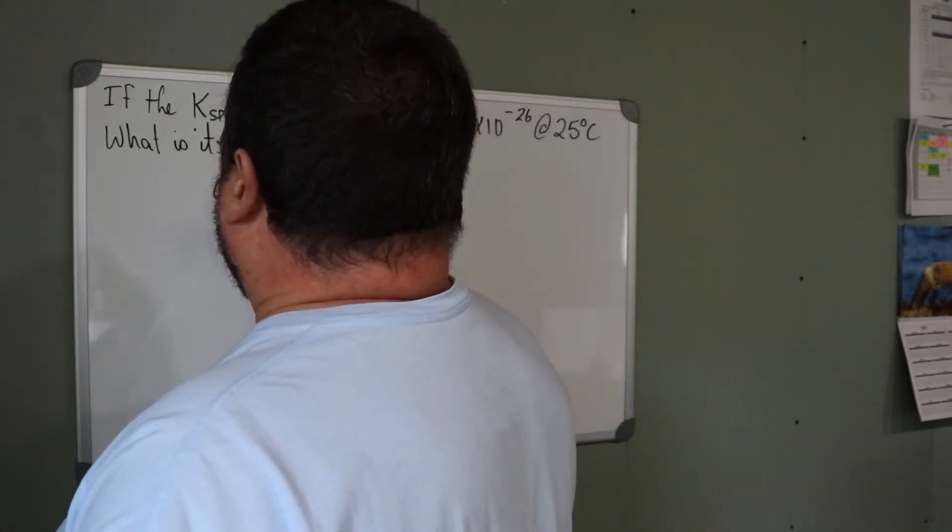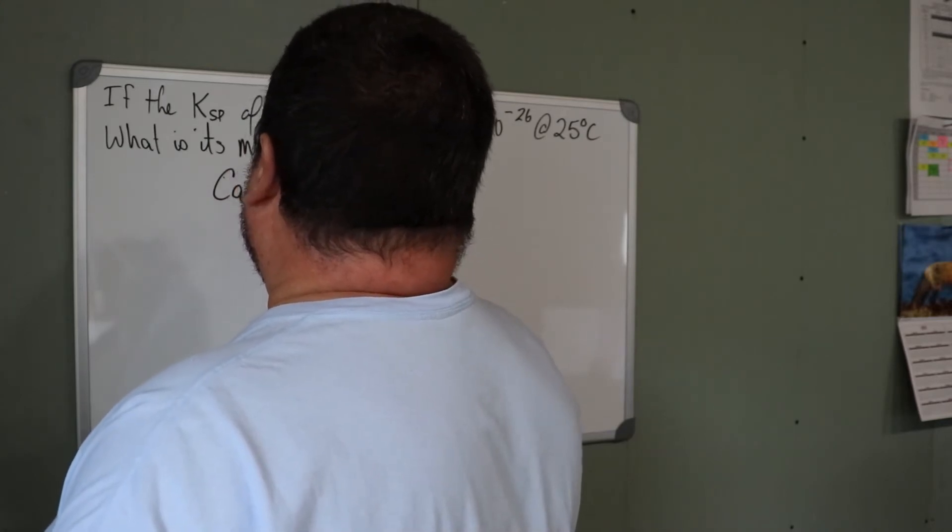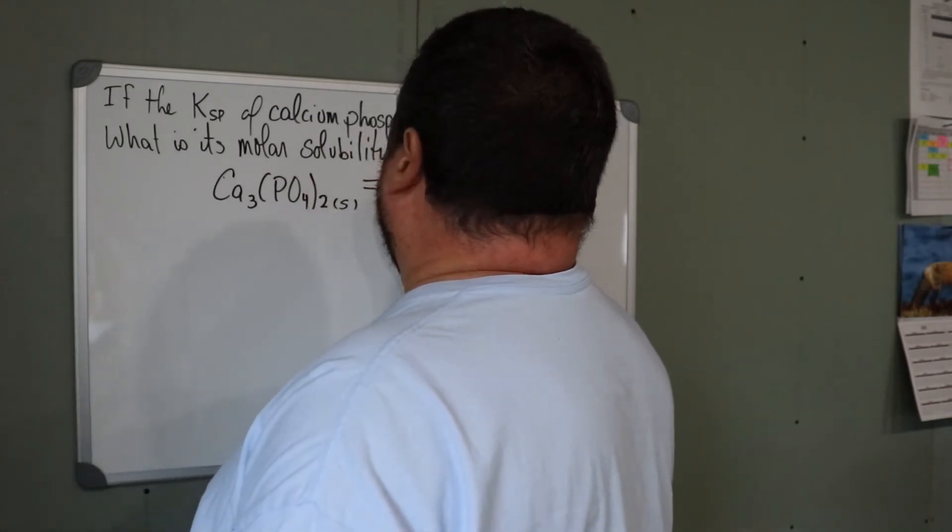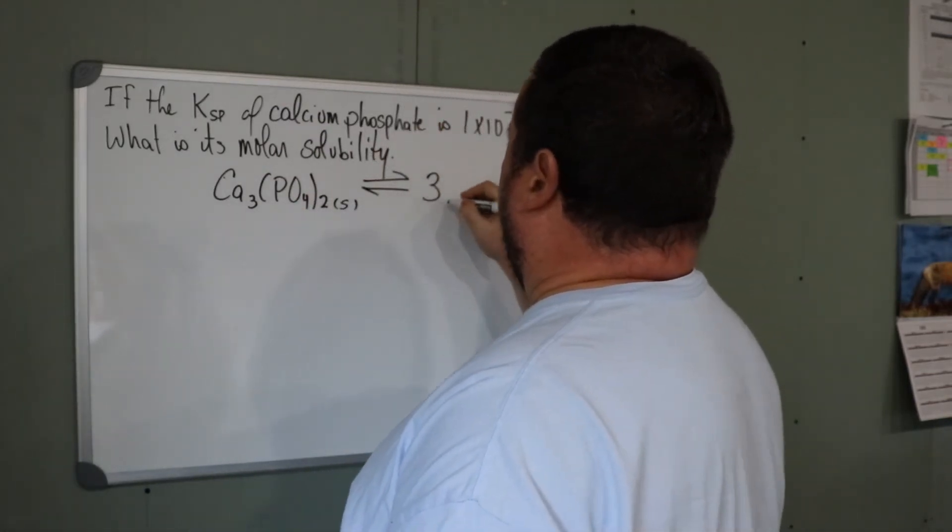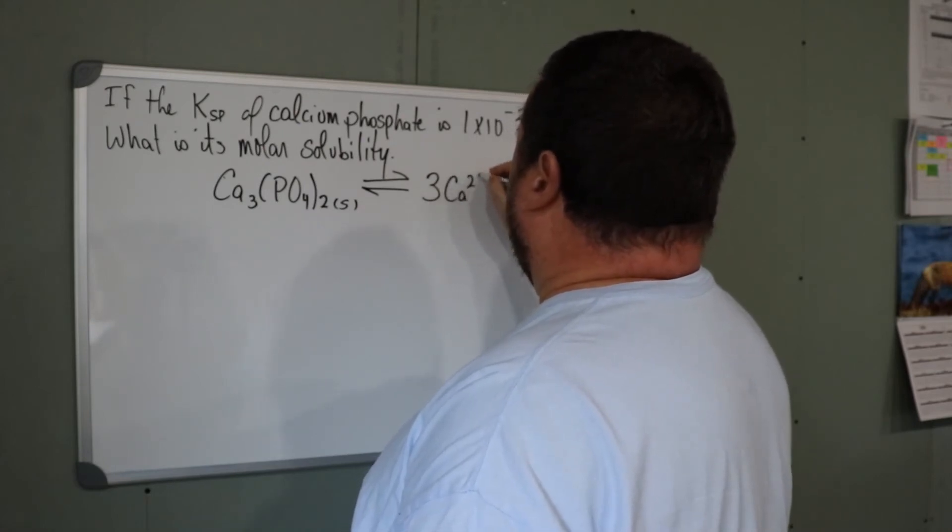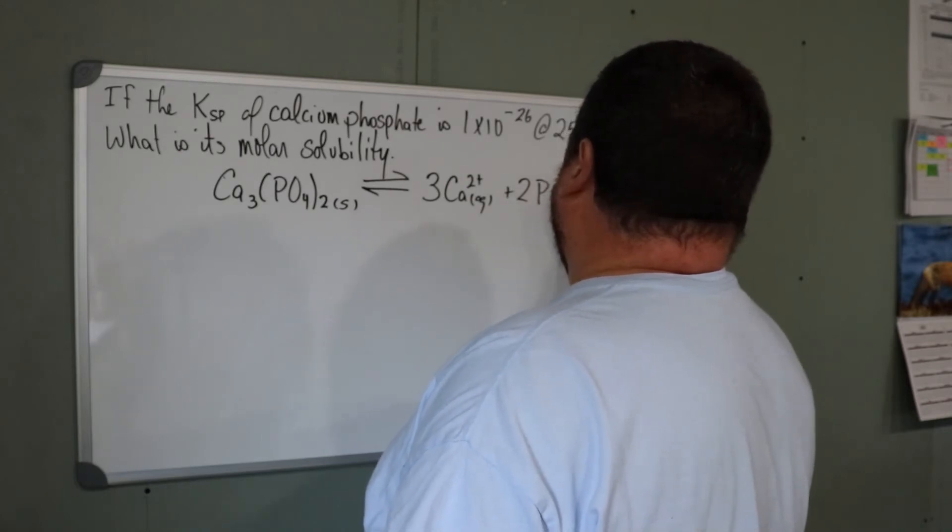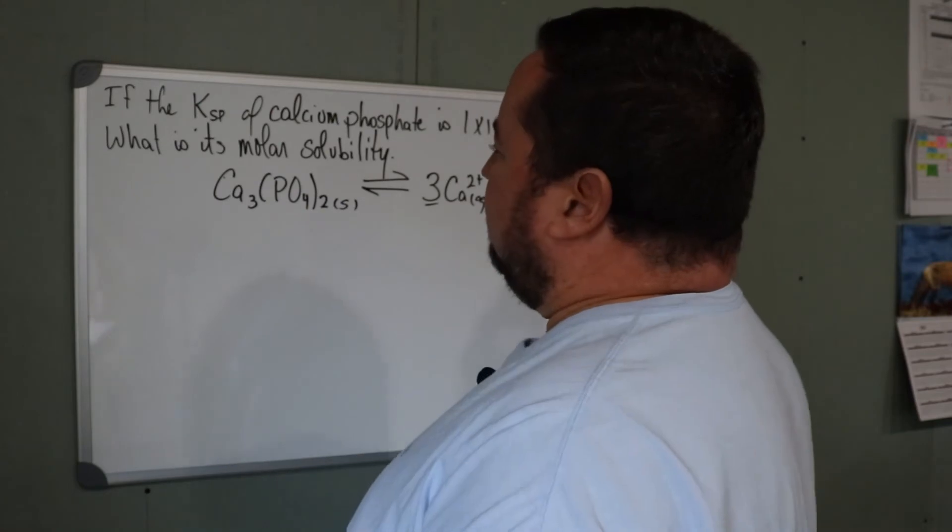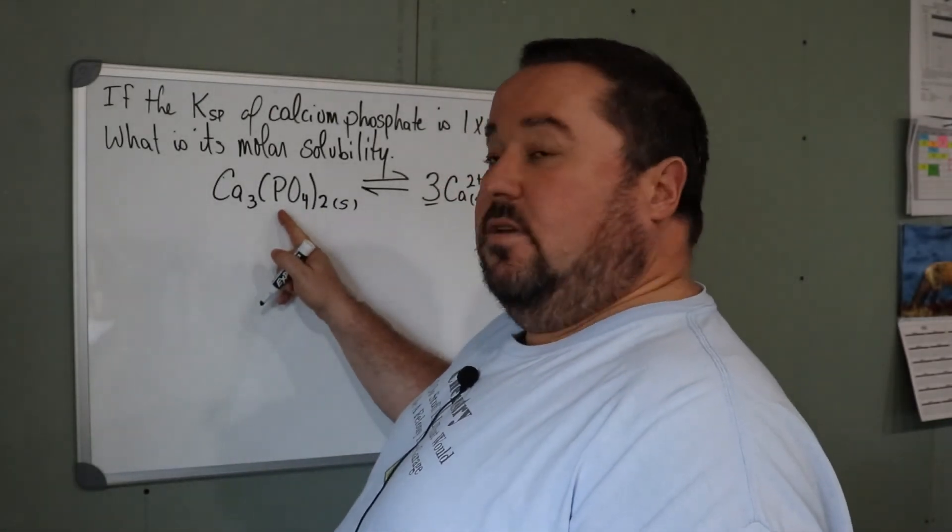So it is Ca3(PO4)2 in equilibrium with its ions. And when a calcium phosphate dissolves, it gives us three of the Ca2+ and two of the PO4 3-.